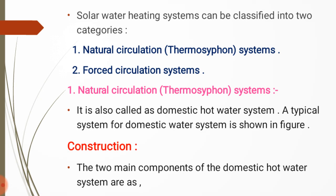The solar water heating system is used for different purposes, and the hot water obtained from it is used for various purposes. Depending on that, solar water heating systems are classified into two types. First is the natural circulation system, also called the thermosyphon system or domestic hot water system. Second is the forced circulation system.